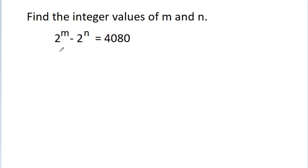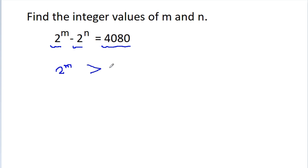In this video, we have given that 2 power m minus 2 power n is equal to 4080, and we have to find the integer values of m and n. Since 2 power m minus 2 power n is positive, that means 2 power m should be greater than 2 power n, and this implies m should be greater than n.